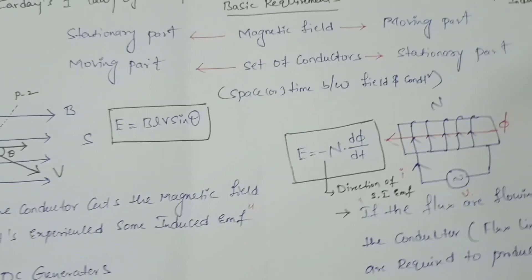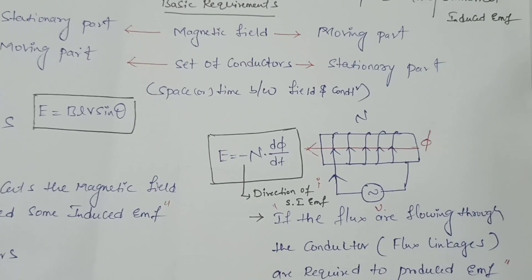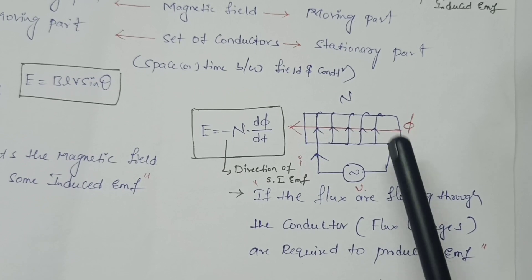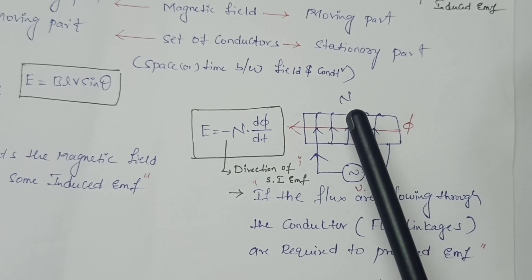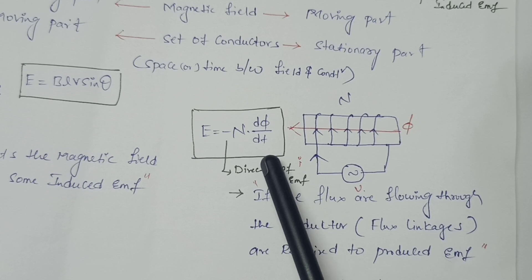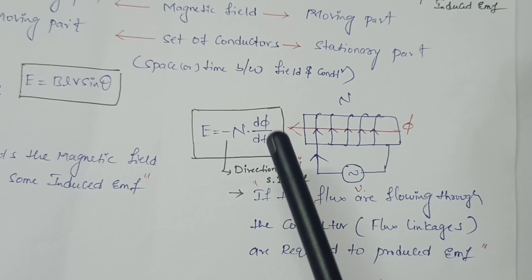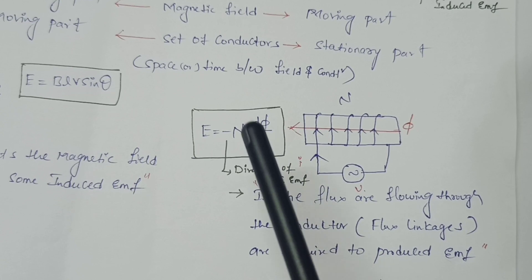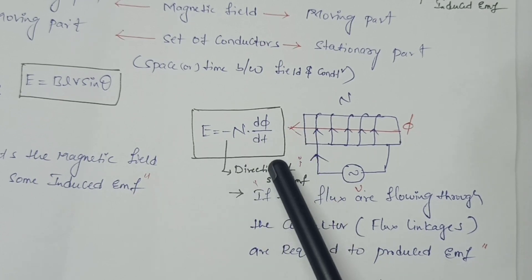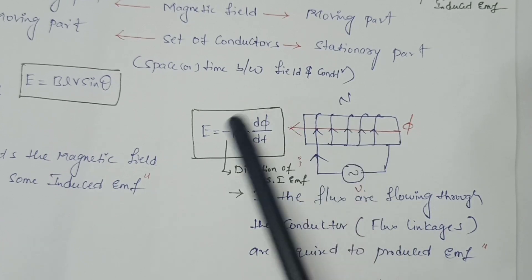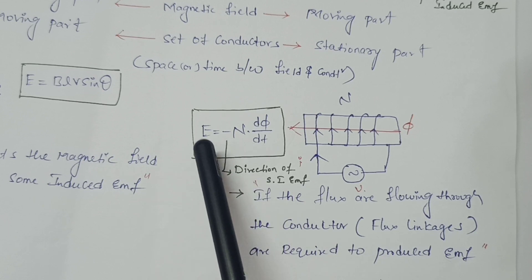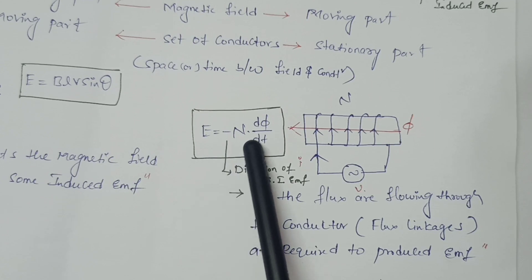Coming to Faraday's second law — that is statistical induced EMF. According to Faraday's second law, the magnitude of statistical induced EMF is equal to the rate of change of flux linkages. Flux linkages are the product of the number of turns N and the flux Φ, so flux linkages equal N×Φ. The formula is: E = −N dΦ/dt.